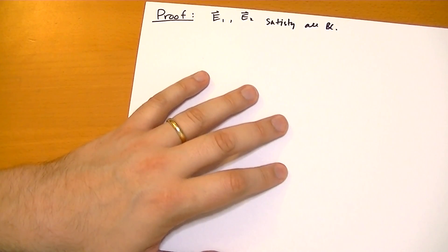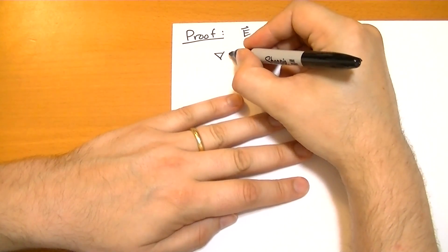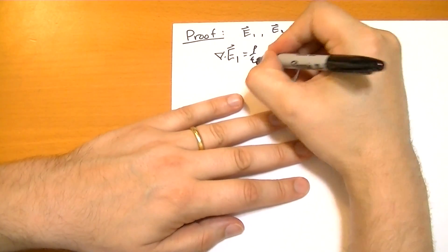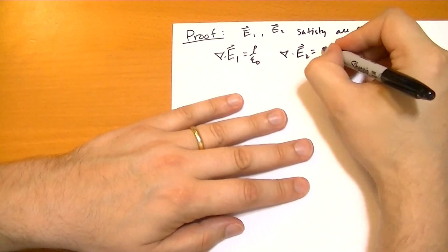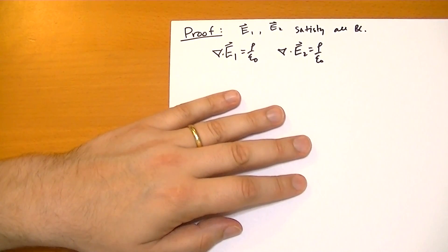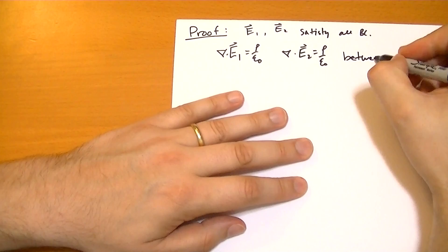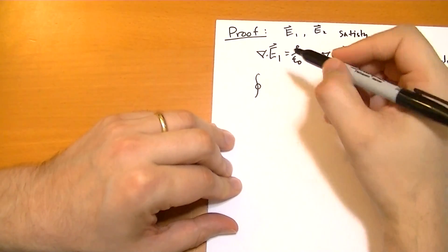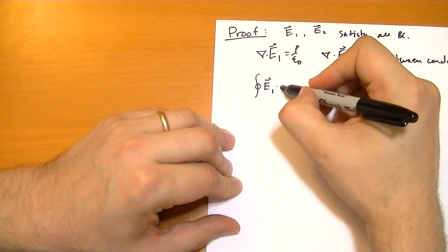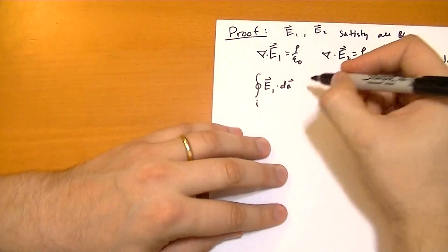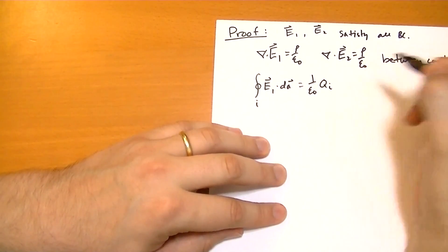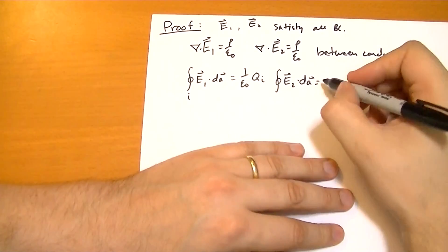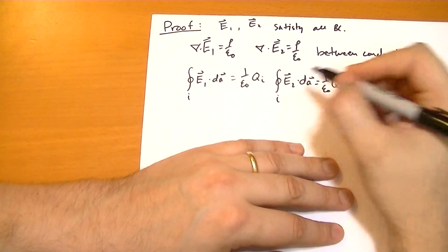And both obey Gauss's law in differential form between the conductors, so that says the divergence of E1 is equal to rho over epsilon naught, and E2 also has the same divergence between the conductors. And we also have the integral form of Gauss's law, which says the surface integral over the i-th surface is equal to 1 over epsilon naught times the total charge on that conductor qi. And that's true for both of them.